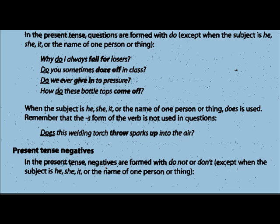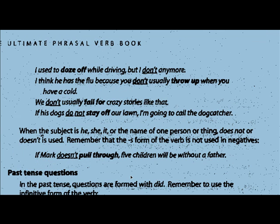Present tense negatives are formed with do not and don't, as you would normally do in any question, except when the subject is he, she, or it, or the name of one person or thing. Here we have examples: I used to doze off while driving, but I don't anymore. I think he has the flu, because you don't usually throw up when you have a cold. And we don't usually fall for crazy stories like that.